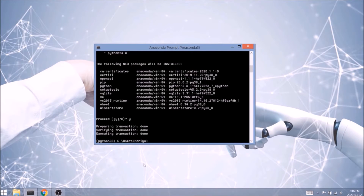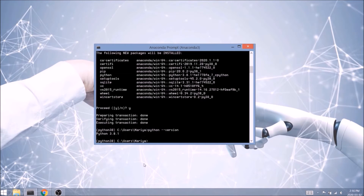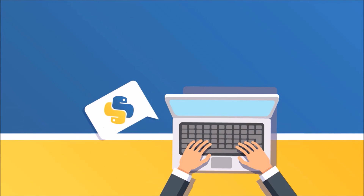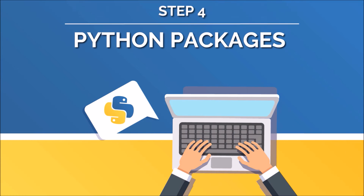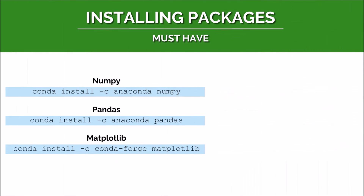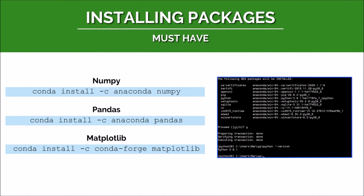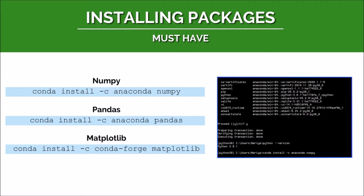Let's check we've got the right version — we'll type: python --version. Pretty simple. And we get 3.8.1, which is exactly what I was aiming for. Now let's install some useful packages, also known as modules, which we'll use later on in the course. Packages add extra functionality to our code and provide shortcuts for complex operations. The first package I recommend installing is NumPy. We'll type: conda install -c anaconda numpy, then Enter to execute.